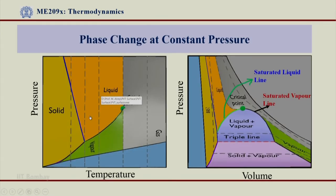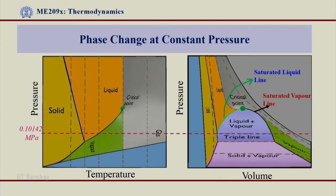Let us go back to our two-dimensional phase diagram — the pressure-temperature diagram and the pressure-volume diagram — and on these let us show a constant pressure process. Since pressure is on the y-axis, any constant pressure process would look like a horizontal line. Phase change at constant pressure would look like this. For understanding, this pressure is 0.10142 MPa, which is atmospheric pressure, and therefore this is where water boils, going from the liquid region to the vapor region — so the LV saturation line comes into picture.